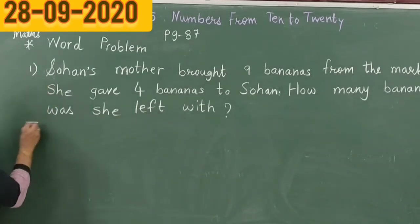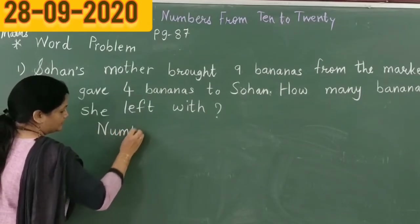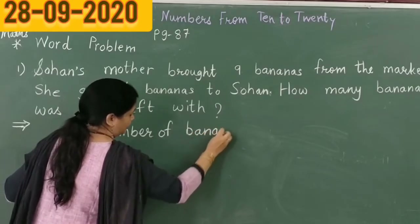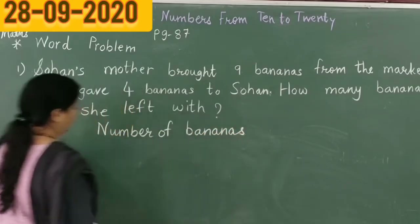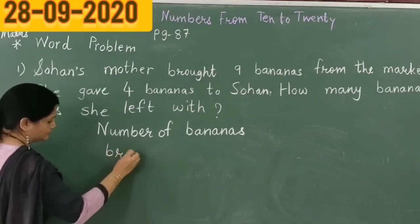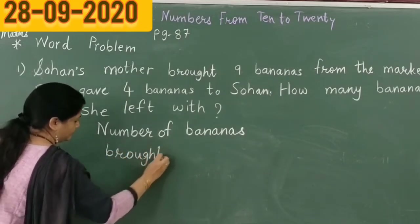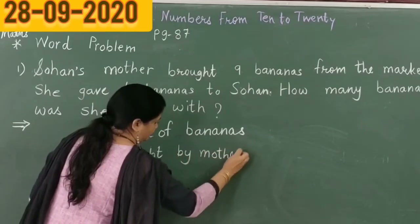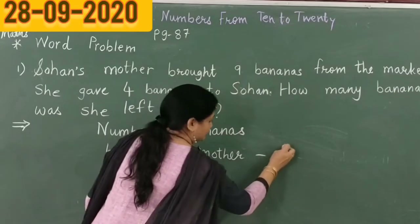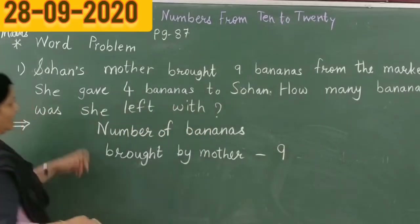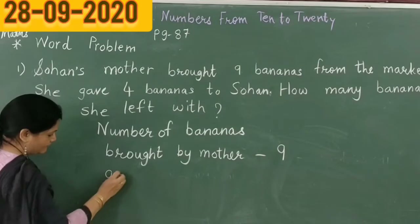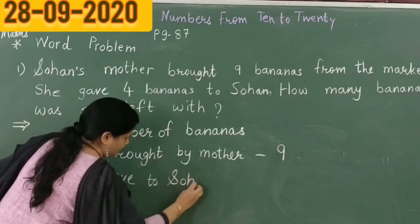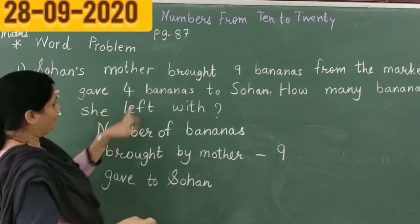So let us write first here. Number of bananas brought by mother is equal to 9. And gave to Soha — how many? 4.